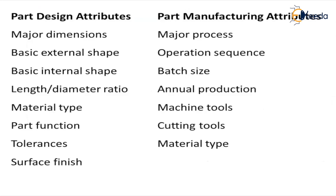What are the design attributes? The major dimension — if it is a circular product, you should know the diameter. Then basic external shape, basic internal shape such as whether it has any drilling, the length-to-diameter ratio, material type, part function, tolerances, and surface finish — everything comes under the design category.